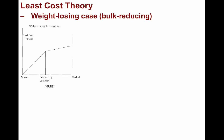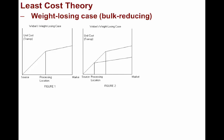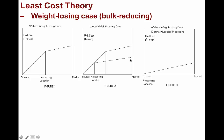Let's first look at the weight-losing case, or the bulk-reducing case. Here's a graph representing the transportation of a raw material from a source. Let's say you're transporting wood to make wooden furniture. Bringing trees to your plant would be expensive — you can see the gradient going up in this direction. But after you process it, the weight would certainly go down, and that's why the gradient goes down at a lower rate. Ideally, you want to start moving your processing location closer to the source, as the cost goes down. Ultimately, you would locate your processing plant directly at the source, reducing your cost as much as possible.